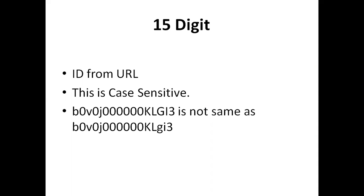The 15 digit ID — we get it from the URL. That means whenever you open a record, it will be there in the URL. That is the 15 digit ID, and it is case sensitive. You can see here — this ID is not the same as this ID, because here 'G' is a small letter and 'GI' is in capital. So this is not the same as the previous one.